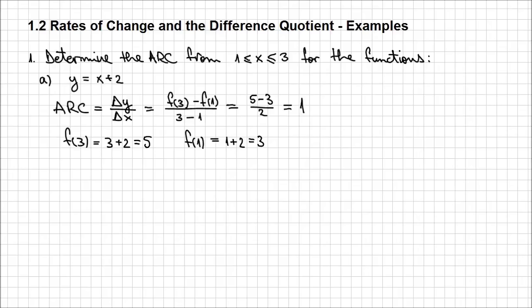I did this so you can verify that applying the difference quotient is going to give us the same result. And that's what I'm going to do next. Let's actually use the difference quotient that we just learned about and try to determine the average rate of change that way. Once again, average rate of change is delta y over delta x, using this difference quotient.